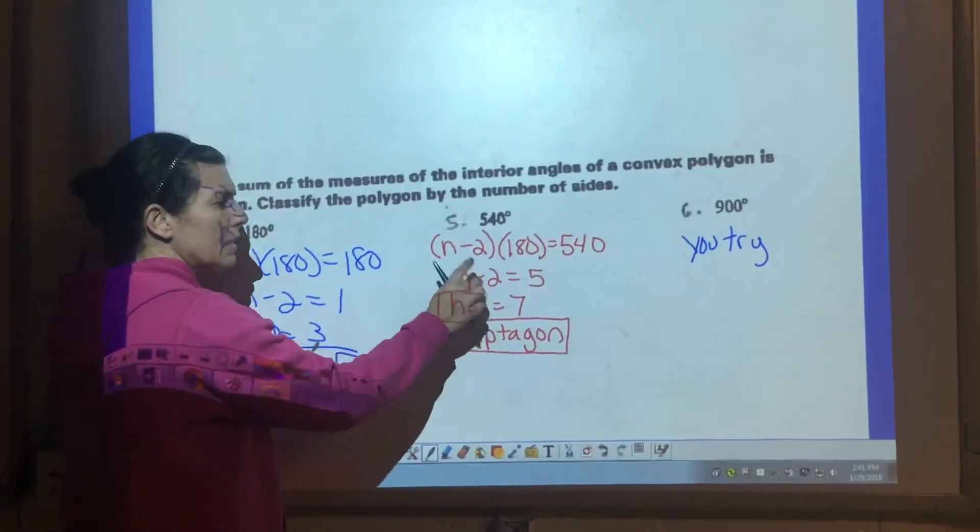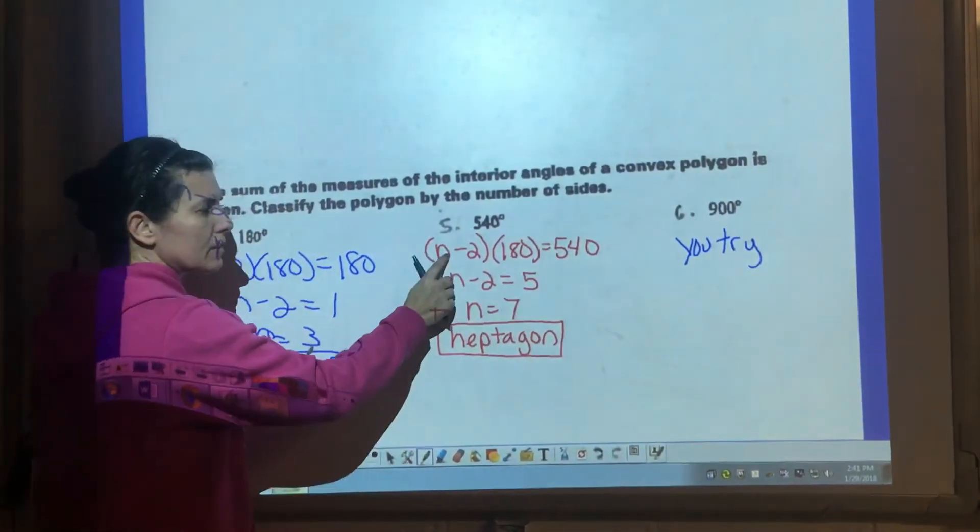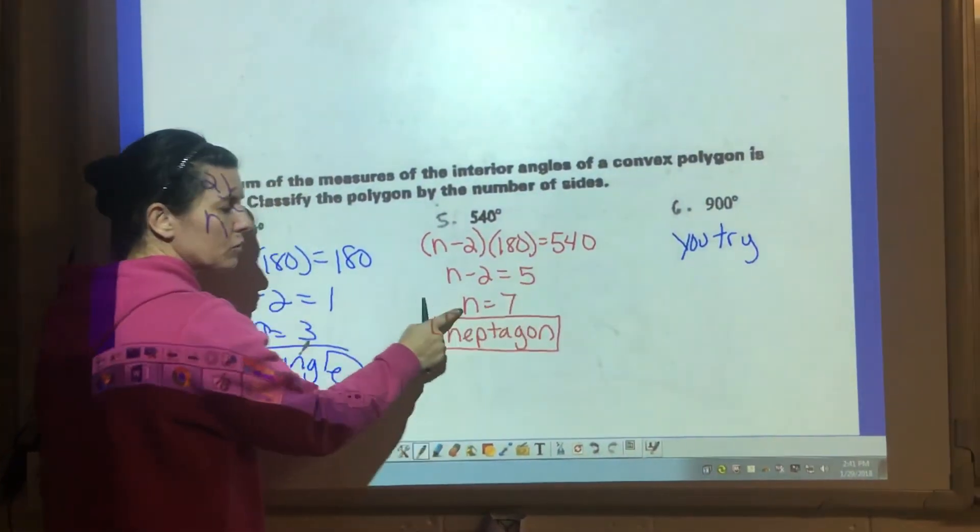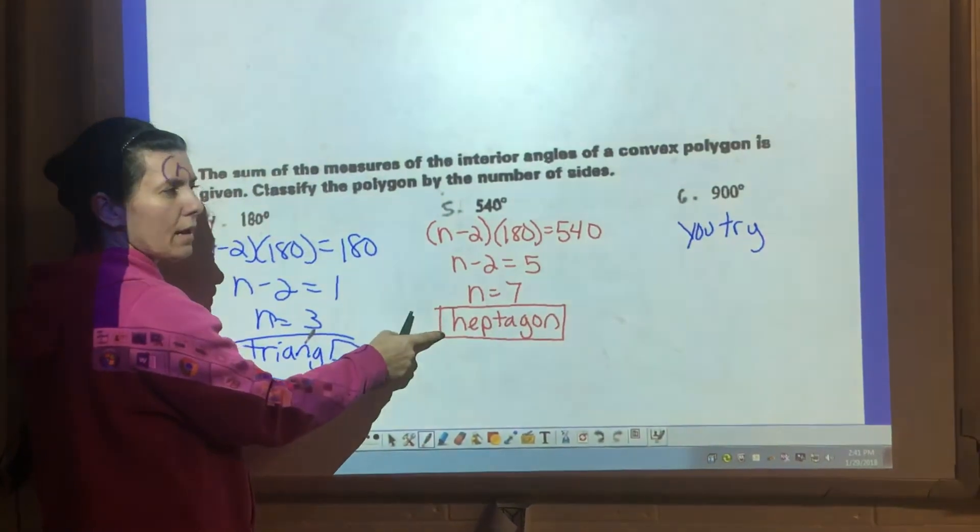For number five, similar idea, we're working backwards using that formula to figure out how many sides it has. Divide by 180, add two, so we know it has seven sides and it's called a heptagon. Try number six, same idea.